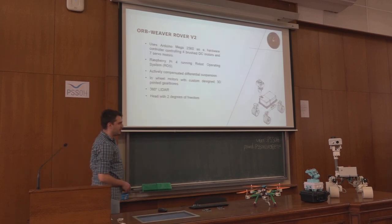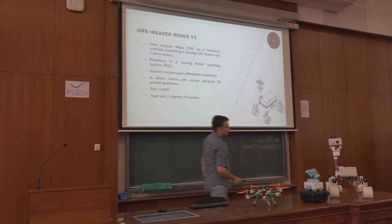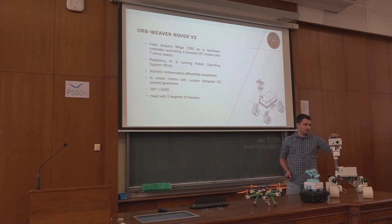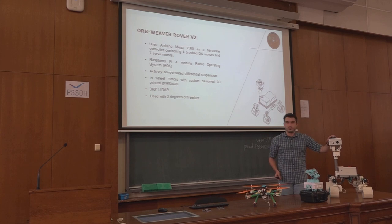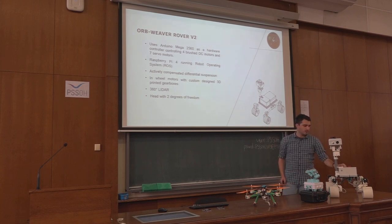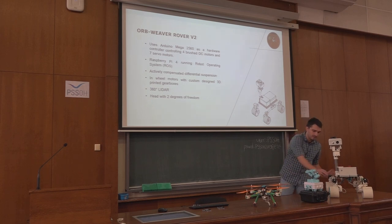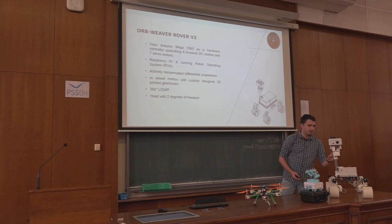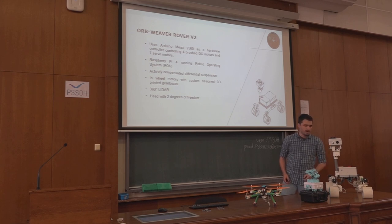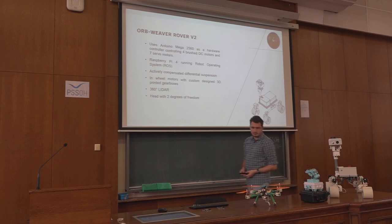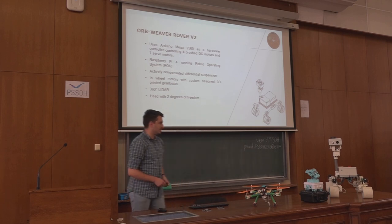The next project is this thing right here — my bachelor thesis, a completely open source rover, the second one I made, that's why V2. It also uses an Arduino — specifically an Arduino Mega 2560 — as a low-level hardware controller. It controls all of the motors: the four motors in the wheels, four steering motors, suspension motors, as well as two motors in the head. Because it's a more complex project, it also uses a Raspberry Pi as a computer running the robot operating system.